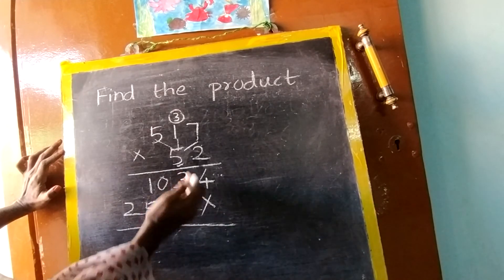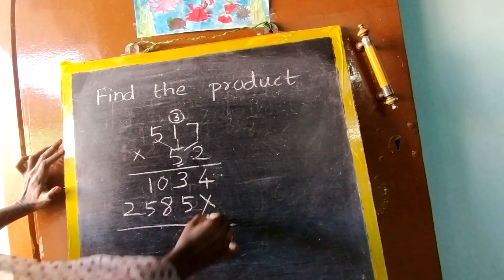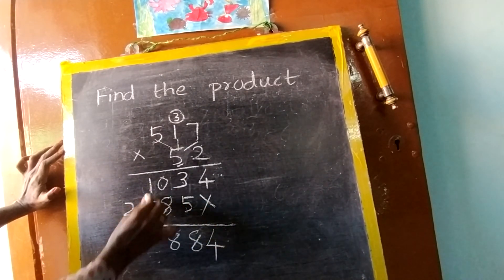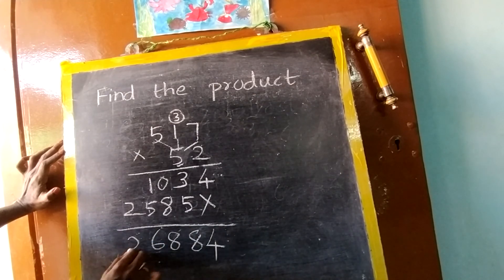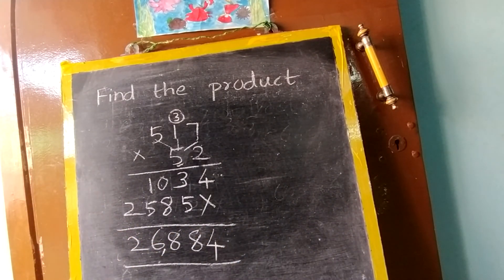Here you have to leave gap between one number. One finger gap at least should be there. Straight you will write 4. 3 plus 5, 8. 0 plus 8, 8. 1 plus 5, 6. Then 2. So the answer is 26,884. I'll see you soon. Bye.